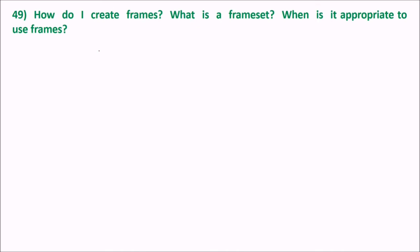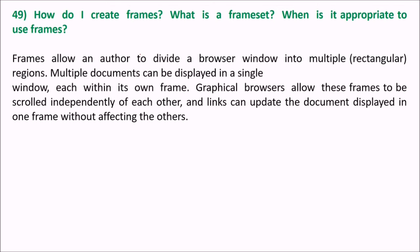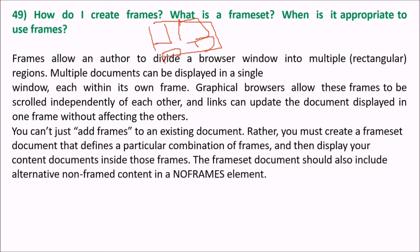How do you create frames? What is a frameset and when is it appropriate to use frames? Frames allow an author to divide the browser into multiple rectangular regions so multiple documents can be displayed in a single window, each within its own frame. You cannot just add frames to an existing document — you must create a frameset document that defines a combination of frames and display your content inside those frames. The frameset document should also include alternative non-frame content in a no-frames element.